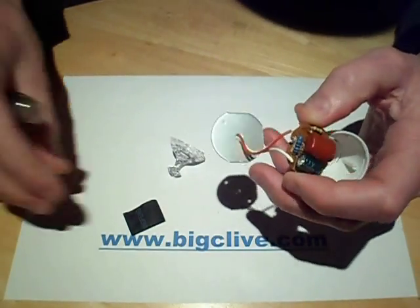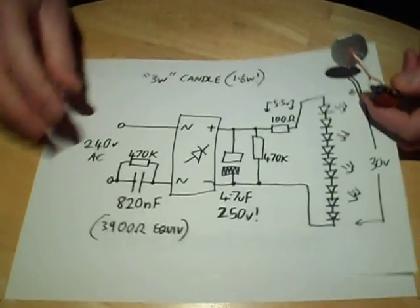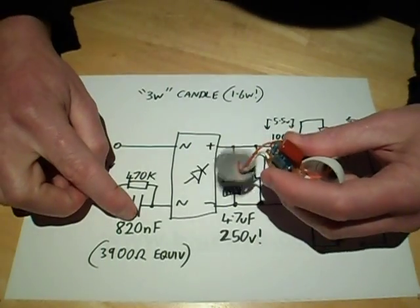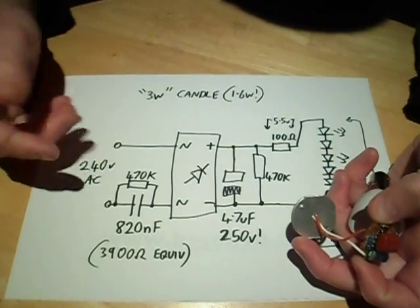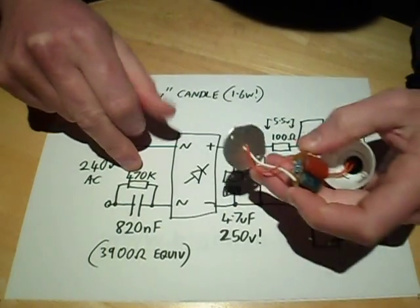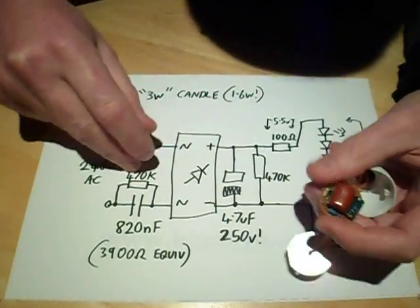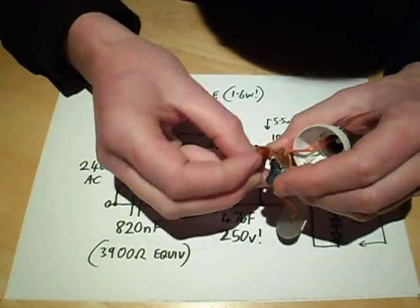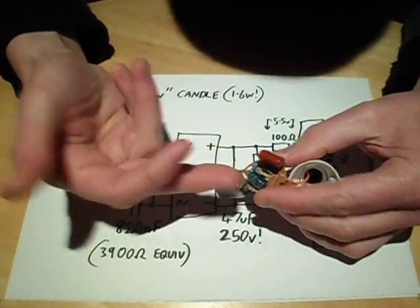Now I shall show you the schematic for this one. Here we go, very typical again. 820 nanofarad capacitor, which seems to be normal for these little lamps on the input. No inrush limiting resistor, but that's quite common again. A 470K discharge resistor across the capacitor. And the output of the rectifier, a discrete rectifier, is a 4.7 microfarad 250 volt electrolytic capacitor.